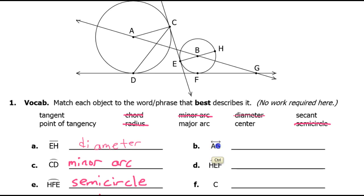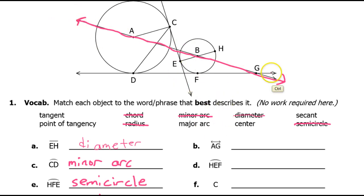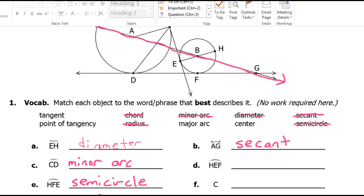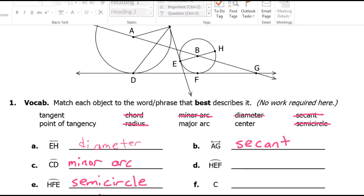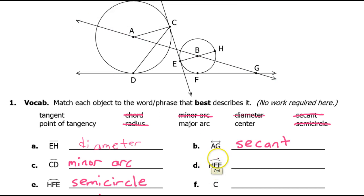Line AG — not segment AG, but line AG — passes through A and G and just keeps going forever. That is a secant: a line that passes through the interior of a circle. Arc HFE is a major arc — it is more than half a circle.